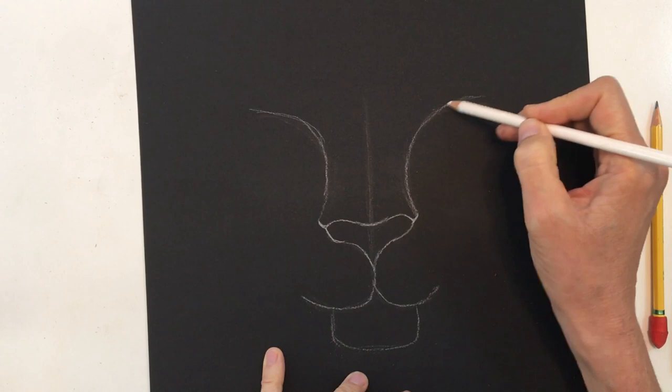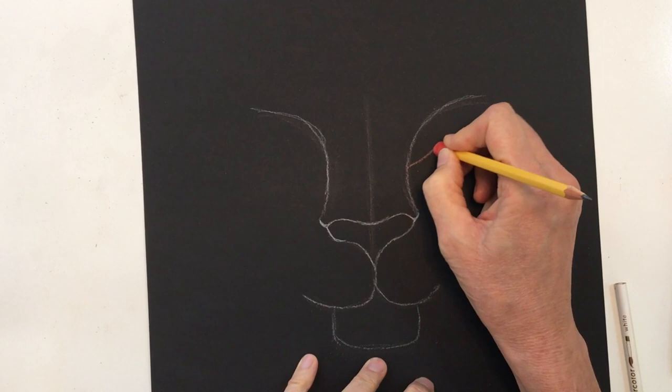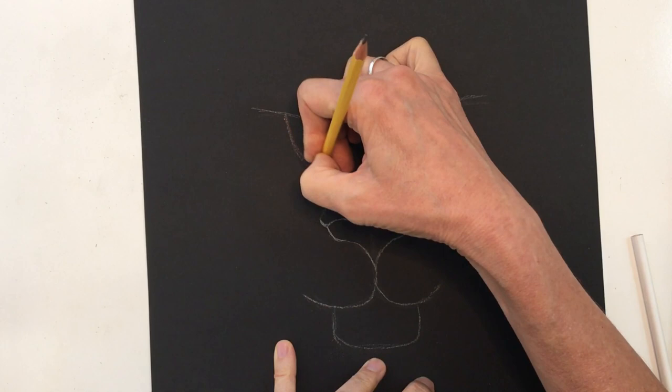Now put in the actual eye socket. Come up a little ways and make an eye shape on both sides. Check for symmetry. Once you feel you have symmetry, you can trace over it with your pencil.